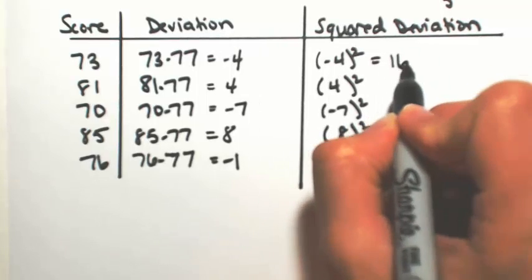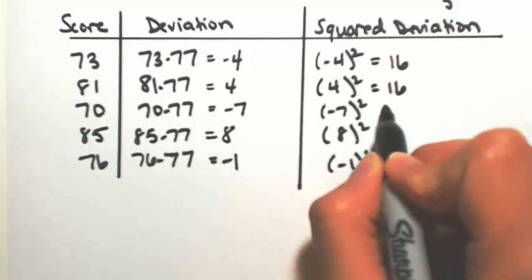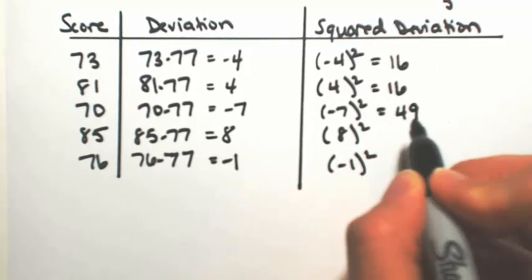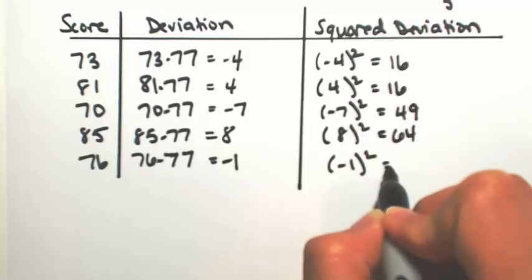So negative 4 squared is 16. And then we get another 16, 49, 64, and 1.